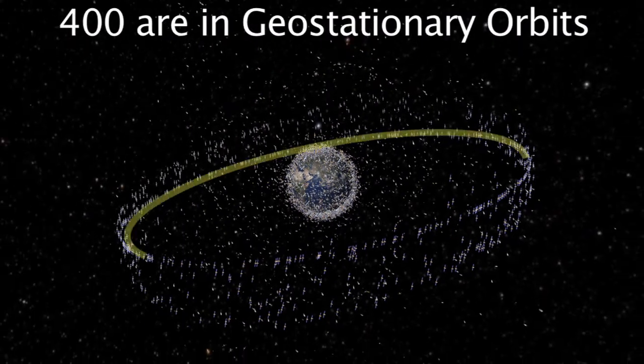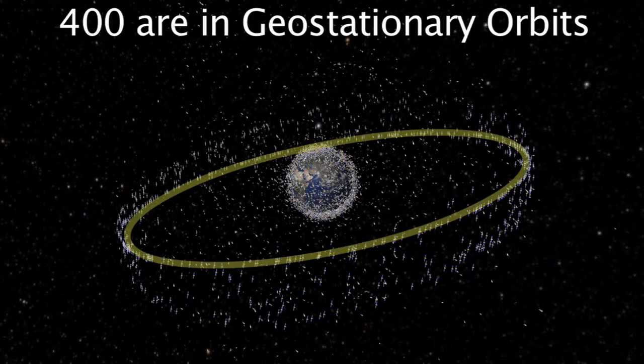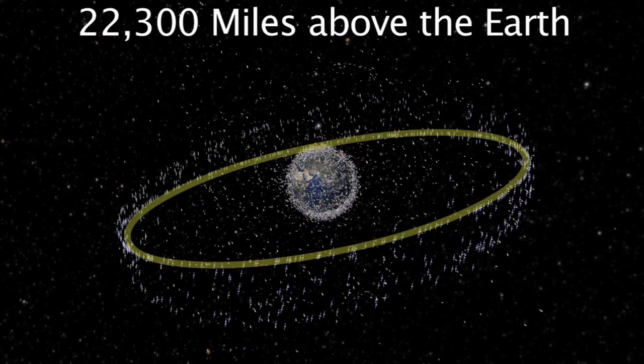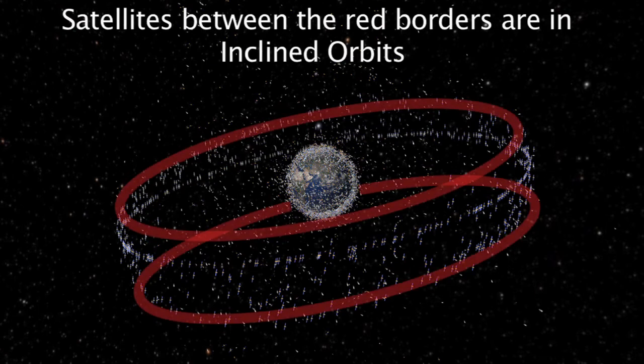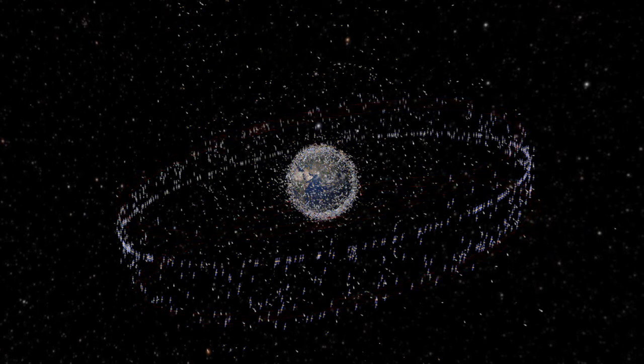This yellow ring shows the satellites that are in geostationary orbit. The satellites between the two red rings are either in inclined orbits or part of the satellite graveyard.